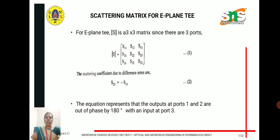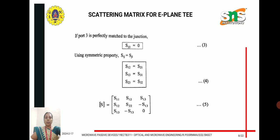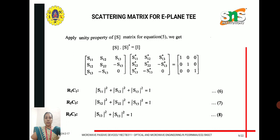Based on the properties of the E-plane T, we can derive the scattering matrix of the E-plane junction. Since it has 3 ports, we write a 3×3 matrix from S11 to S33. The properties applied are: the diagonal property where S33 equals 0, the symmetric property where transpose elements are equal, and the unity property for a lossless junction where the conjugate term multiplied by the S-matrix equals the identity matrix, i.e., S times S* equals I.